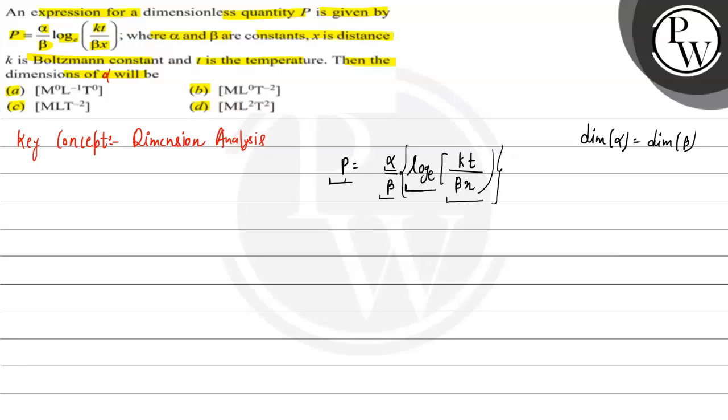The argument must be dimensionless. The log argument is kt by beta x. This is also dimensionless. A dimensionless quantity is equal to 1. If it is dimensionless, then we can equate it to 1.